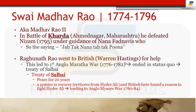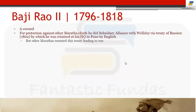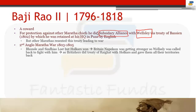Then came Bajirao II — son of Raghunath Rao. He was essentially a coward. For protection against other Maratha chiefs, he did a subsidiary alliance with Wellesley through the Treaty of Vasai. Since he could not fight, he went to Wellesley the Governor-General. Under this treaty, Marathas would act as a subsidiary of the British, and British would protect the Marathas. He was retained in Pune by the English, but other Maratha chiefs resented this treaty, leading to the Second Anglo-Maratha War.